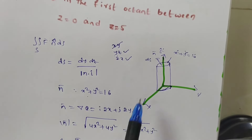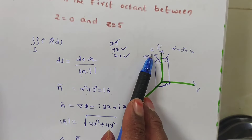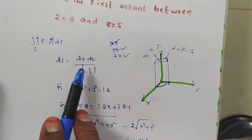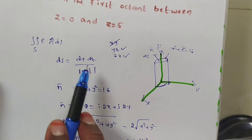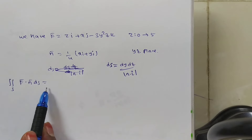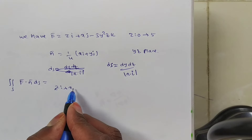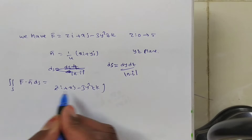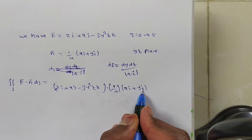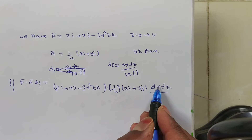The ds on the yz-plane and n̄ are both done. Now the integral ∬_S f̄ · n̄ ds equals f̄ = (zi + xj - 3y²zk) dotted with n̂ = (1/4)(xi + yj), multiplied by ds = dy dz / (n̄ · î).